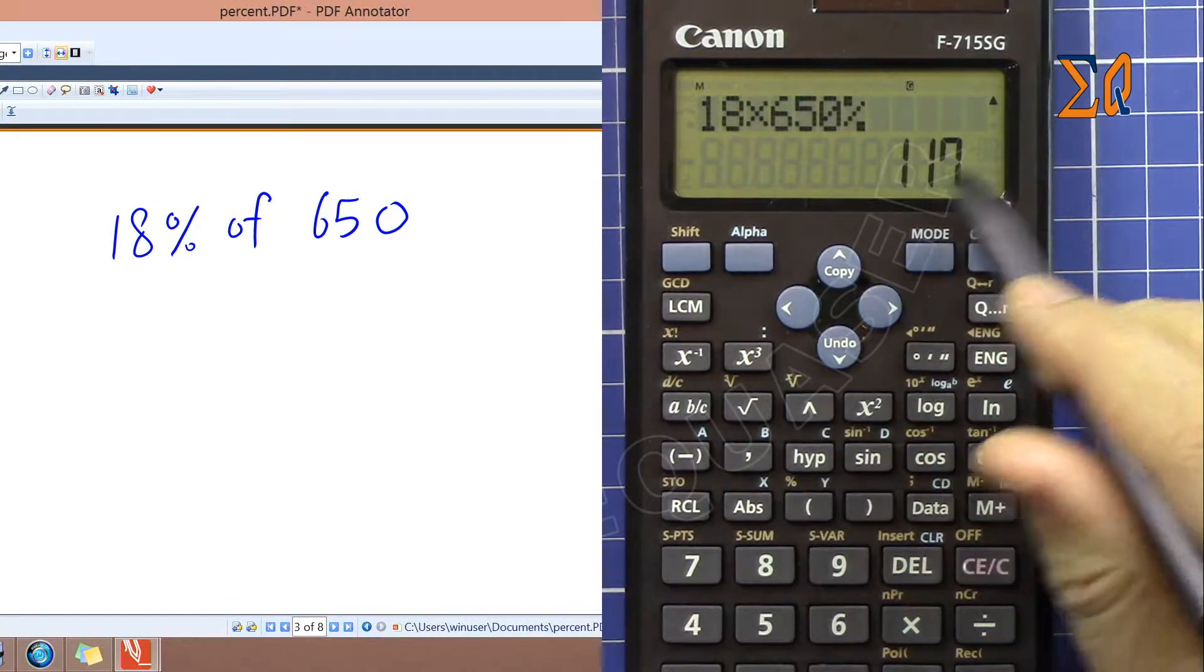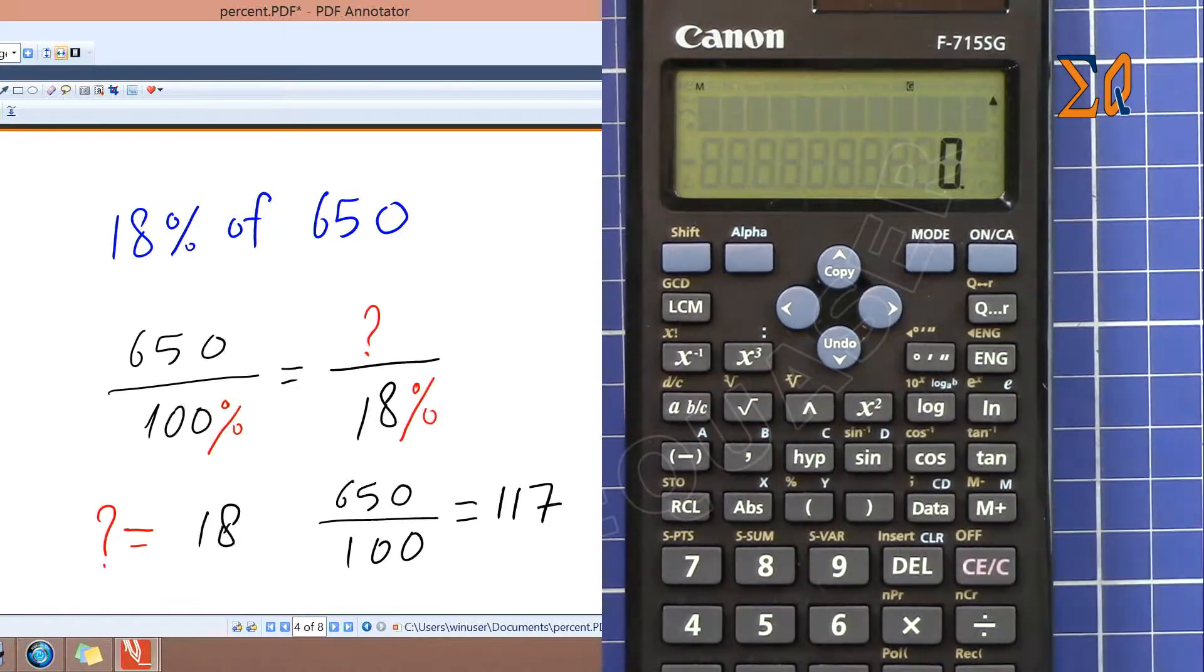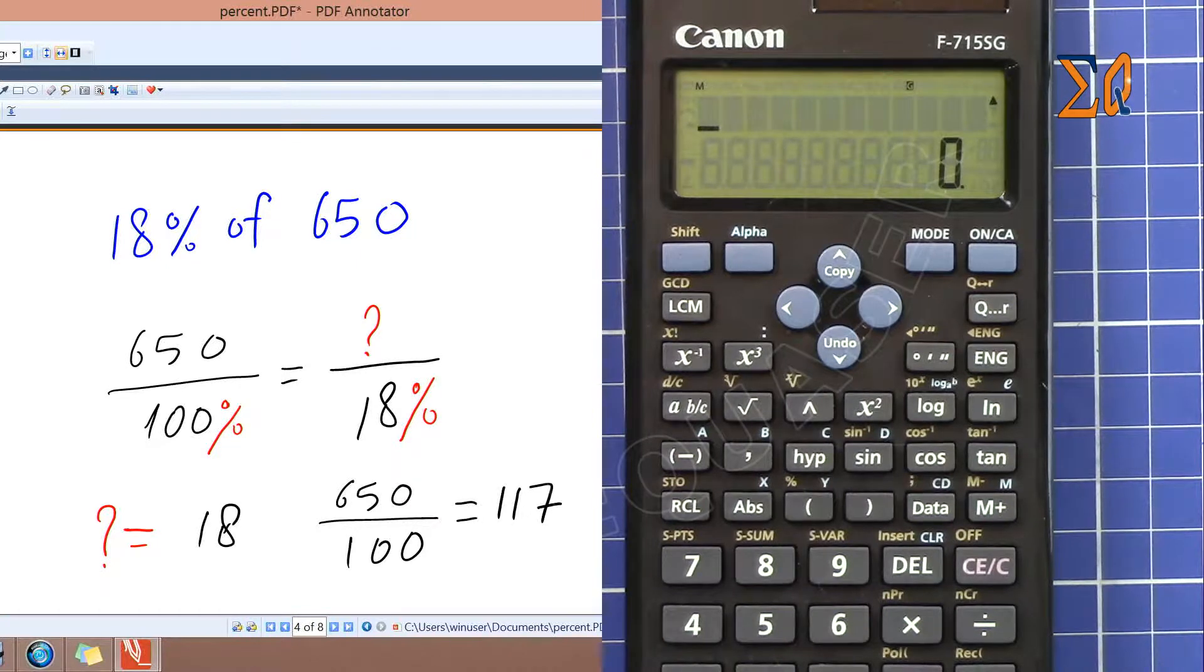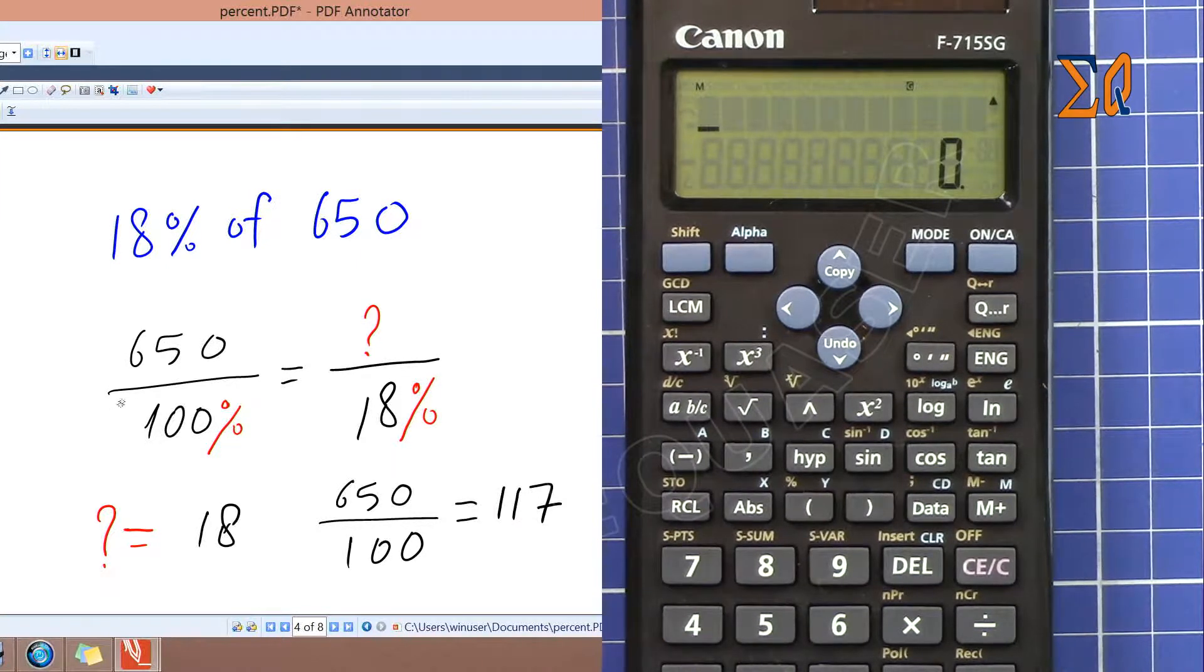So that would give you the value. Now actually you can write the question like this: write 650 over 100 because it's 100 percent. And then here, the value we don't know, write it with the actual value and the percentage at the denominator.